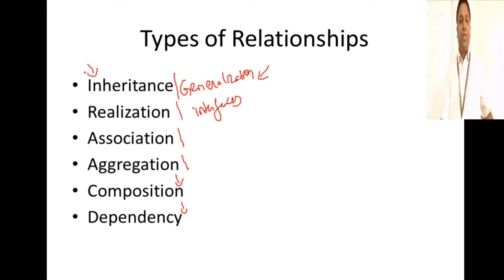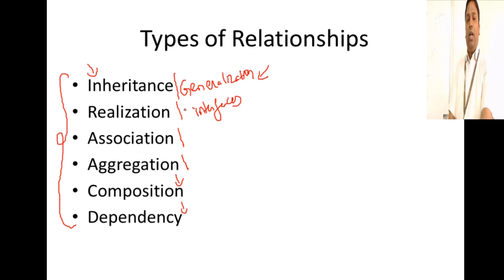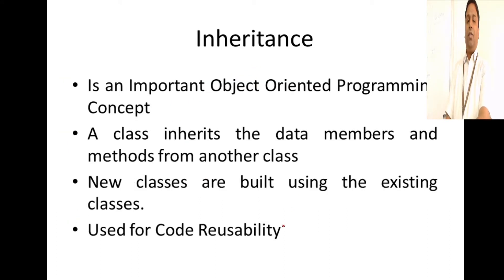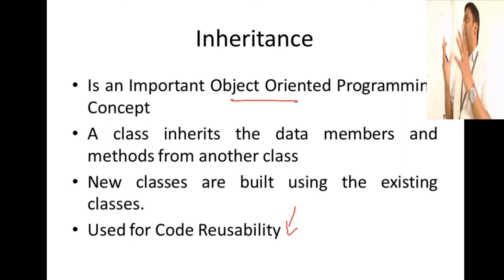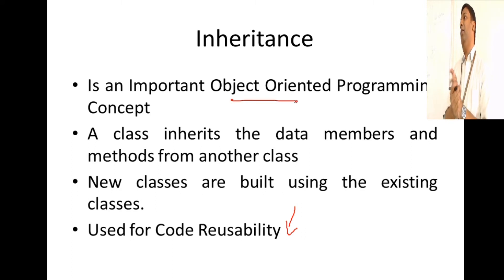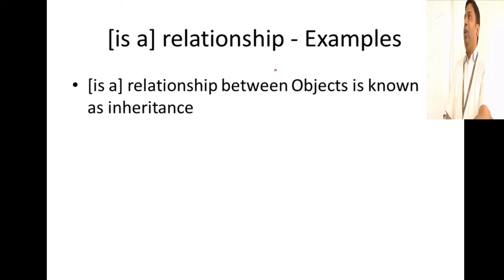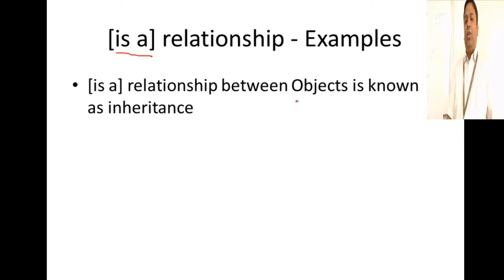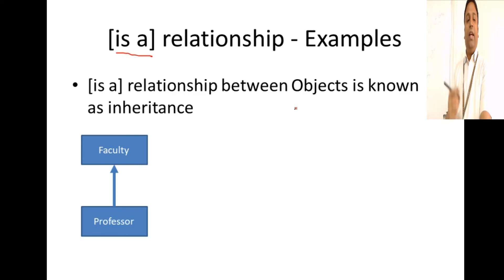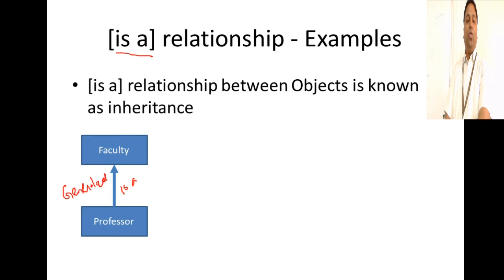These are the relationships we will establish between classes. We start with generalization or inheritance. We use inheritance for code reusability, and it is a very important object-oriented programming concept. A class will inherit all the protected and public data items from its base class. New classes can be built using existing classes. When two classes have an 'is-a' relationship, that indicates inheritance. For instance, 'professor is a faculty' — the relationship here is inheritance, or generalization according to UML standards.